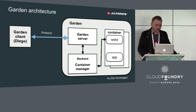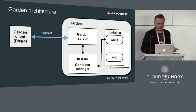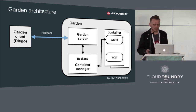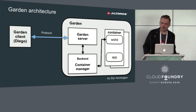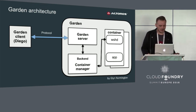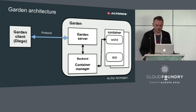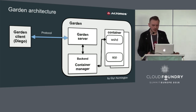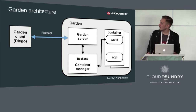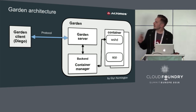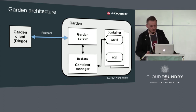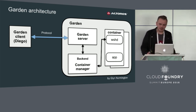Here is the Garden architecture. Garden clients, which are now Diego cells, talk to the Garden server by protocol. It's still protocol-based, but Garden also provides an HTTP RESTful API for debugging purposes. In order to provide flexibility, the Garden server was decoupled from the container manager, which now lives in a separate component called the backend. Garden provides unified contracts that do not depend on the underlying containers implementation.